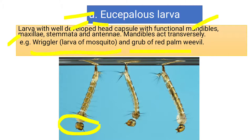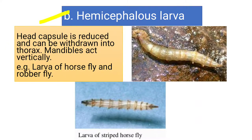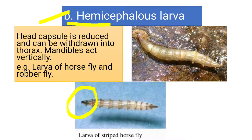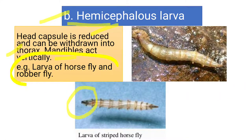Then comes the hemicephalus larvae. In hemicephalus larvae, the head capsule is not fully developed — it is reduced and can be withdrawn into the thorax. The mandibles act vertically to bite the food. Horse fly and robber fly larvae are of hemicephalus type, with a reduced head that can retract back into the thorax.